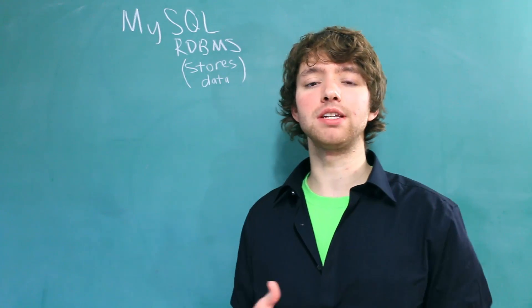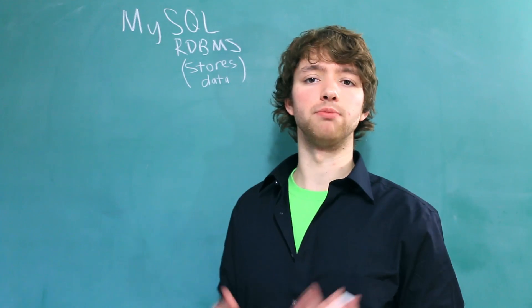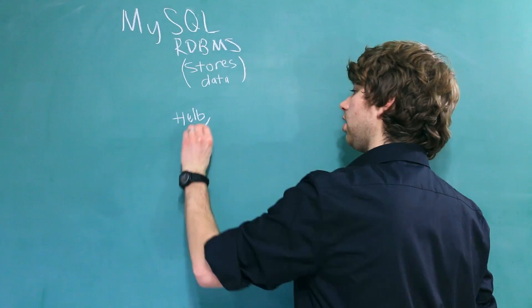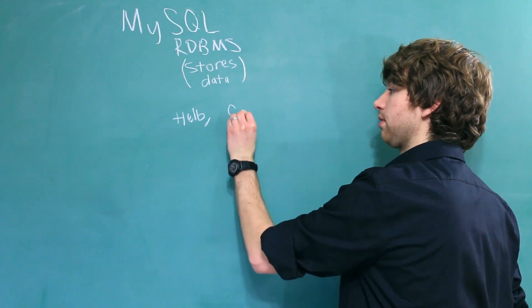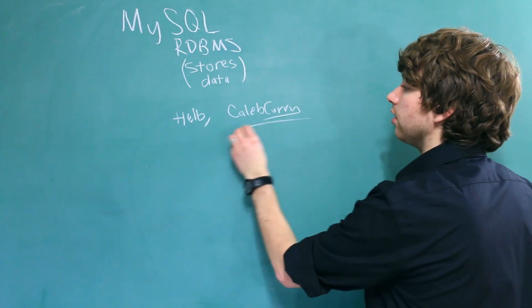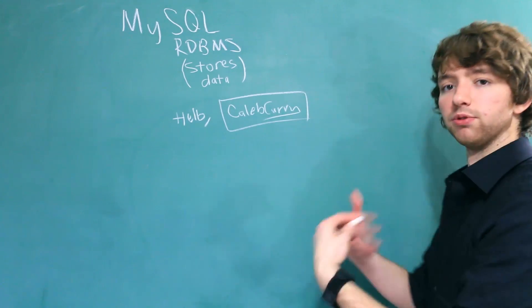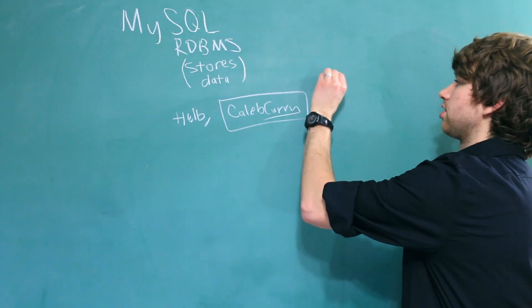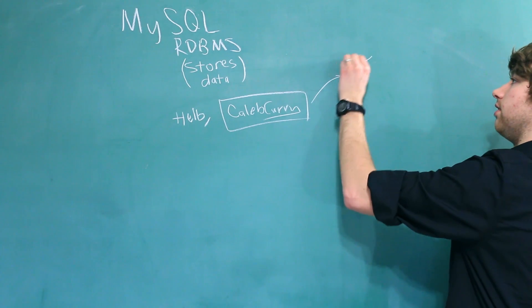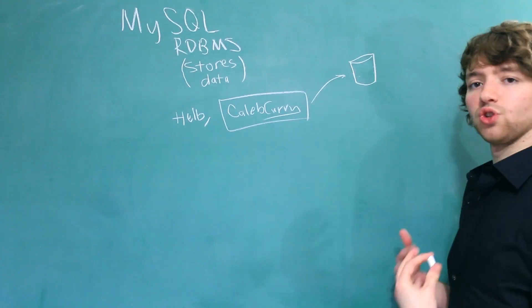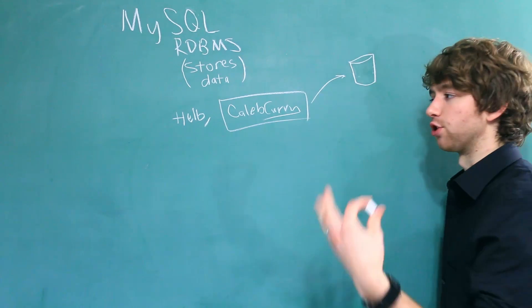Often databases are used behind an application. So an application might say something like, Hello, and then say the username. This section right here has to come from something. All of this information is stored inside of a database. So this allows us to make apps that are dynamic.